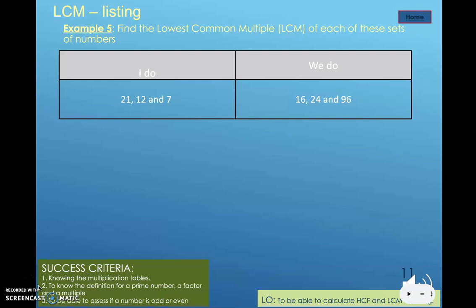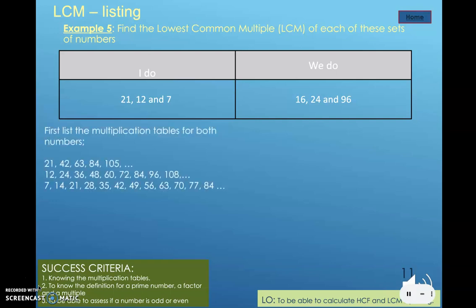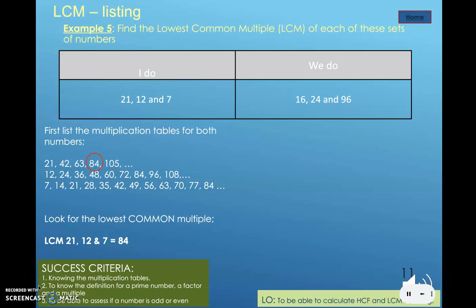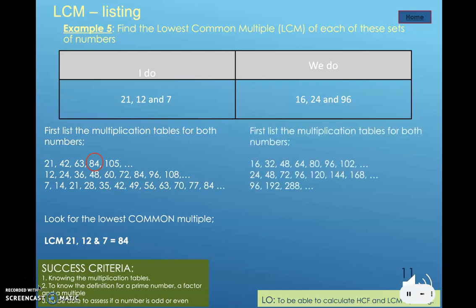Now there is a slight difference — copy the We Do down. We have three numbers this time, so we list the multiplication tables for all three numbers. We then look for the lowest common multiple that is in all three lists and find that to be 84. Pause the video now and attempt the We Do — you have two minutes. We list the multiplication tables, look for the lowest common multiple and find that to be 96.